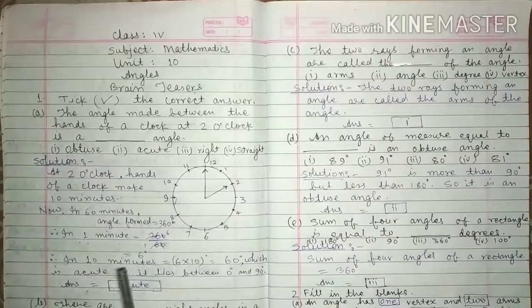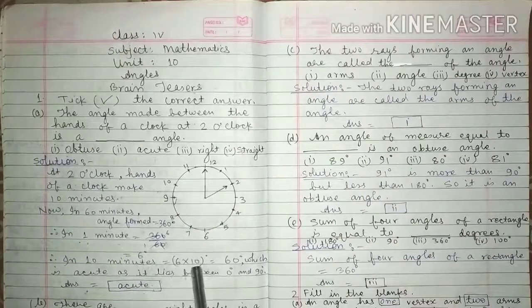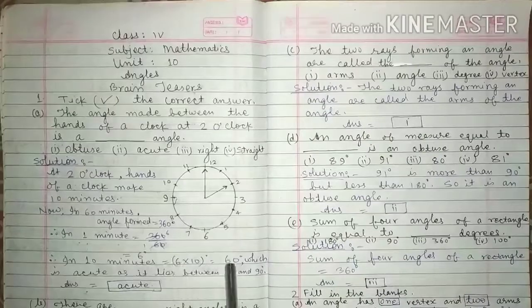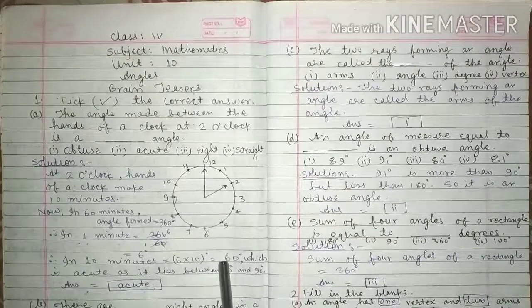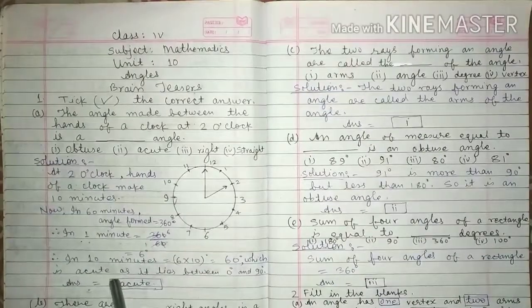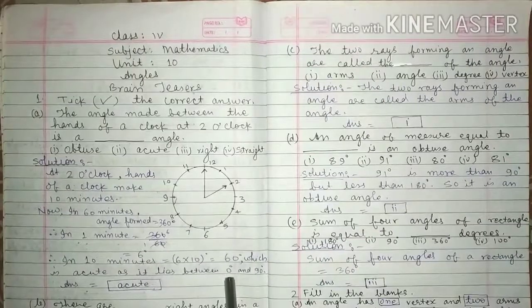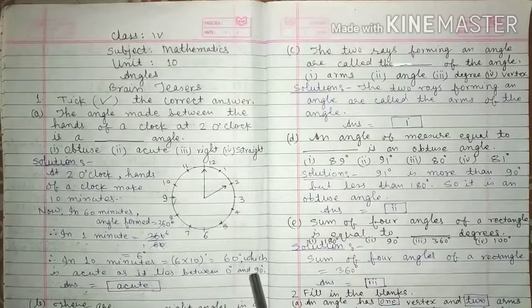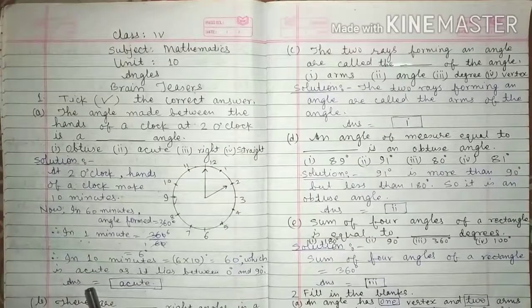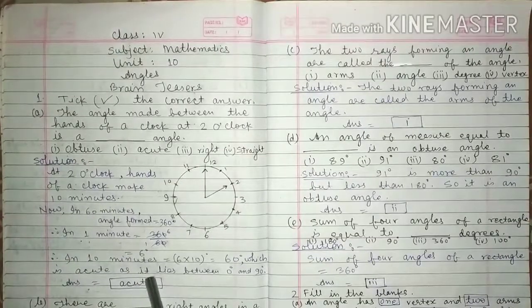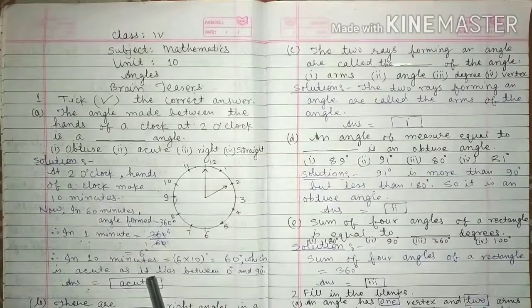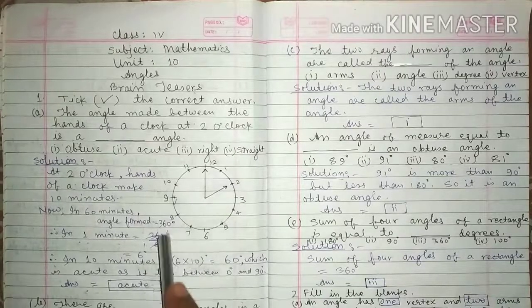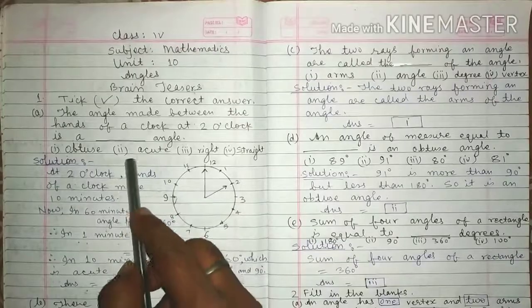Therefore, in 10 minutes, 6 into 10 degree, that is 60 degree. This 60 degree is acute as it lies between 0 and 90. 60 degree lies between 0 and 90. So it is acute. The answer of this question is acute and the right answer is 2.